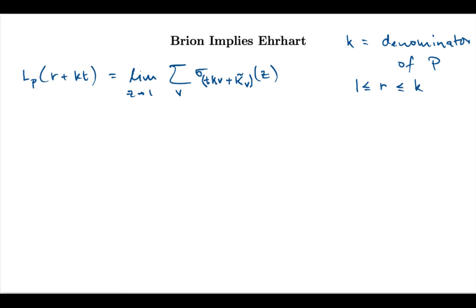So, this is where we are. We want to show L sub p of r plus kt is a polynomial in t. Where, just to remind you, k was the denominator of P and r is some fixed number between 1 and k. And we wrote this as the limit of a sum of rational functions coming from the integer point transforms of vertex cones. Sum goes over all the vertices. And we rewrote the dilated vertex cones in the form that you see over here. And so, the first thing I will do now is I wrote here an integer point transform of a cone as an integer point transform of a translate of another cone. And so, we know how to deal with translates.